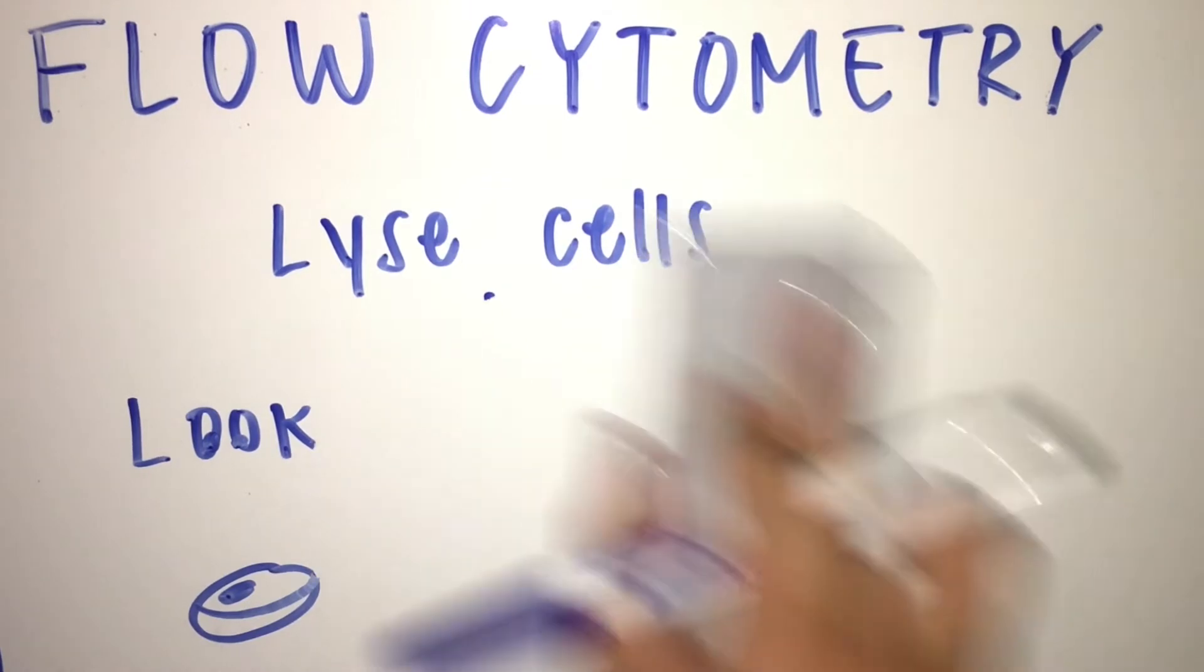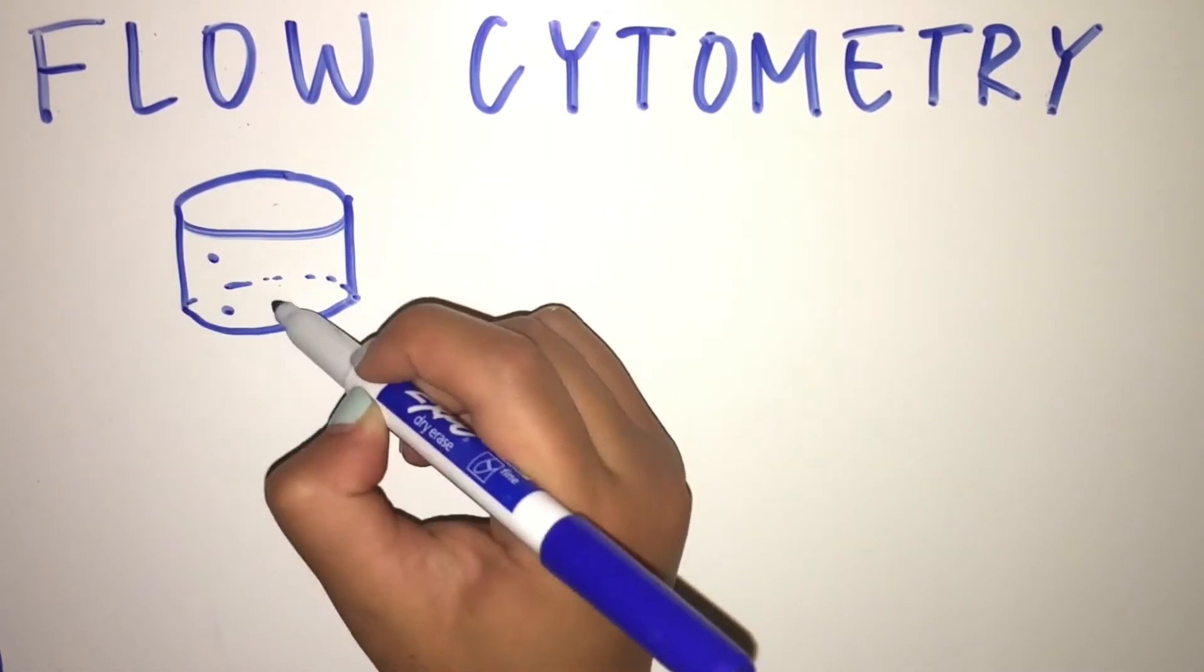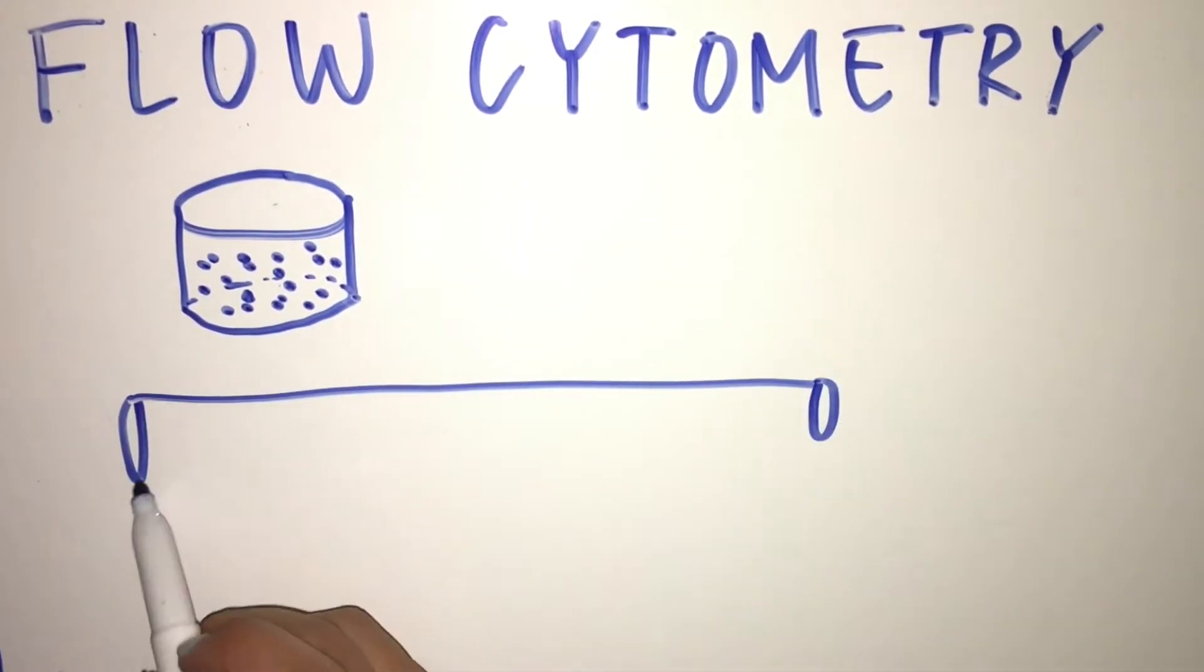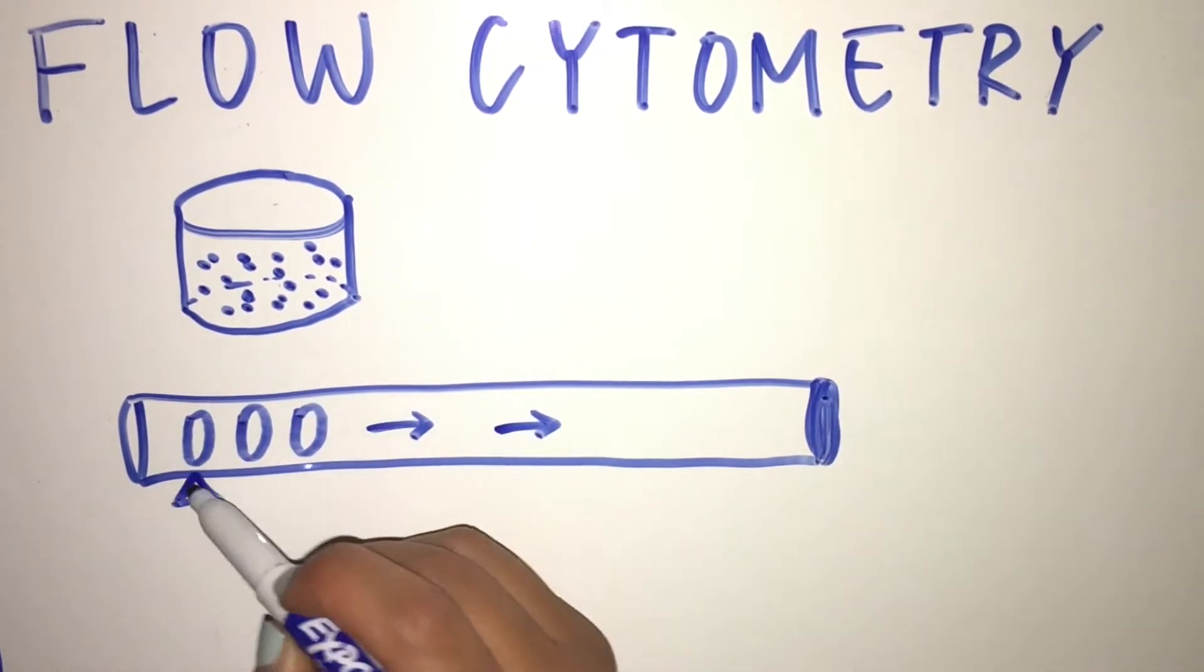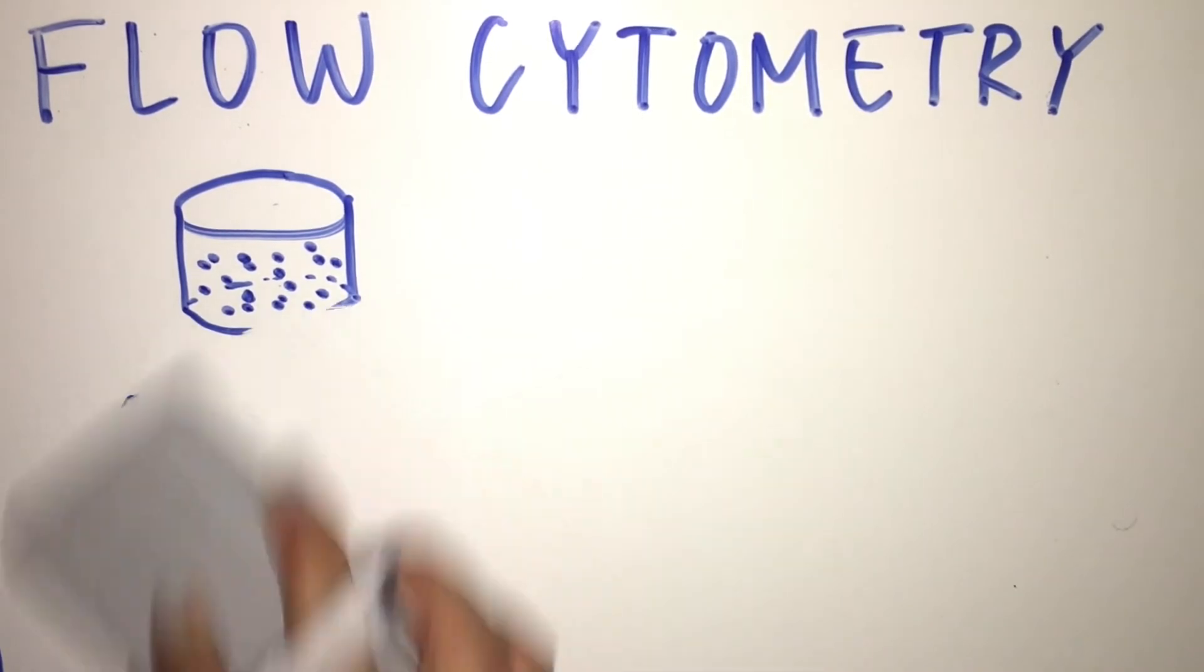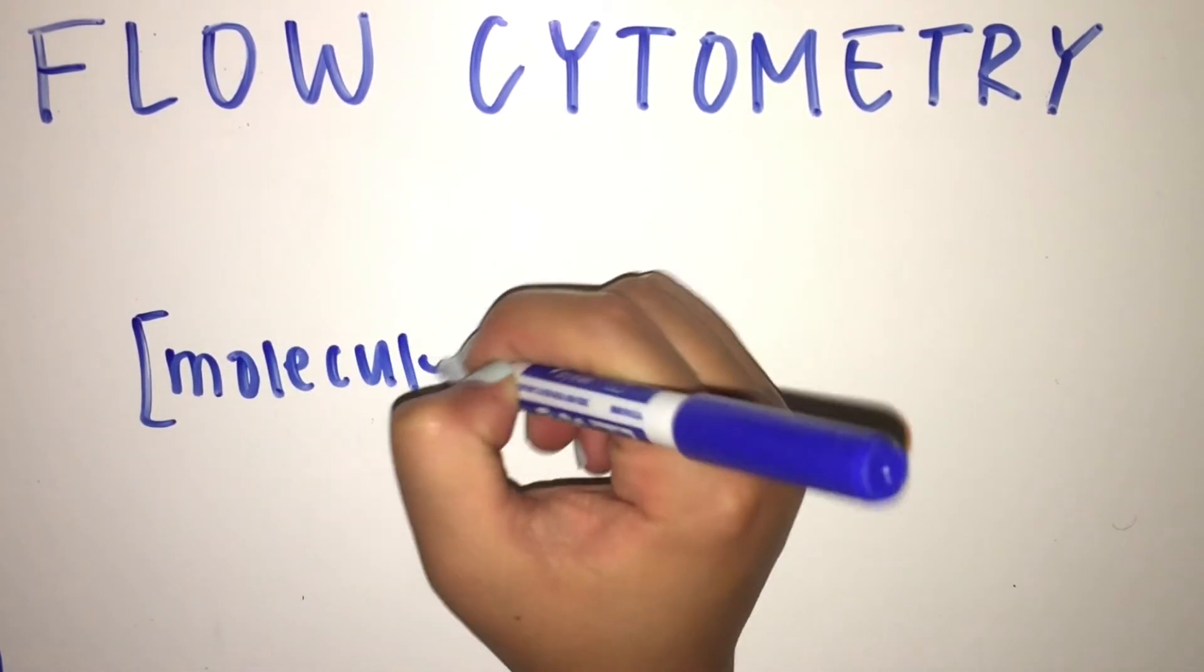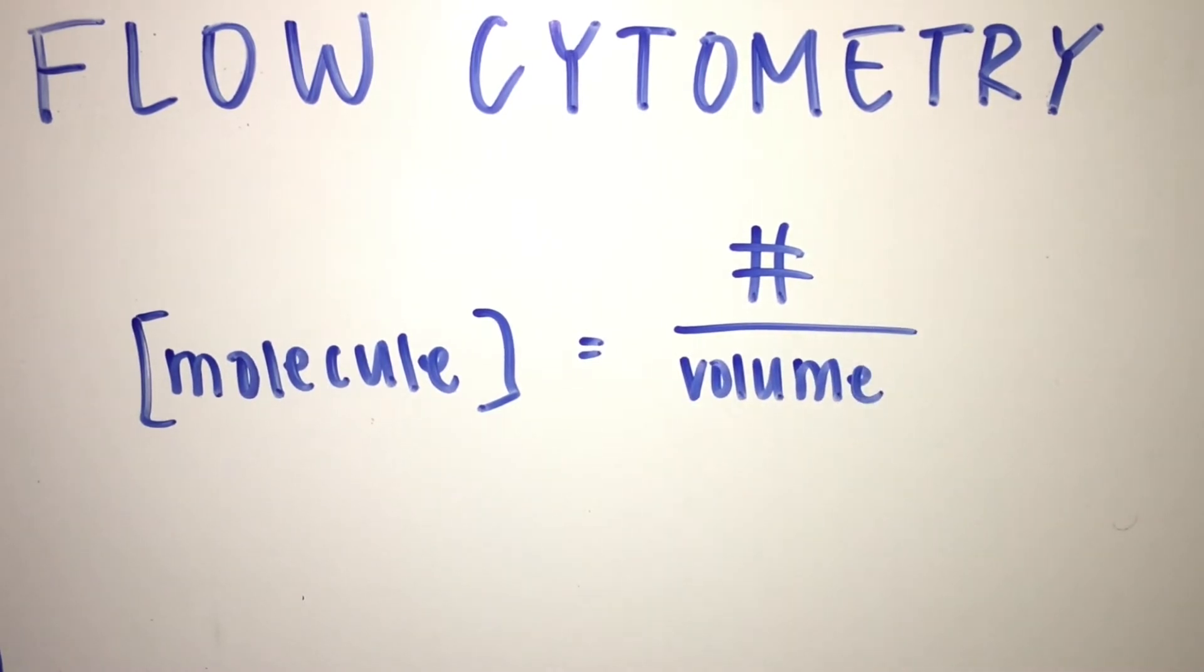So once we break down and purify our sample, we pass it through the flow cytometer, where the cells flow single file. As they pass through the tube, the cells are excited by lasers. We can detect the presence of a certain kind of cell in the cytometer when it gives off a specific wavelength of light post-excitation. Therefore, flow cytometry measures the concentration of a given component, which is the number of that component present in the sample divided by the total volume of the sample.